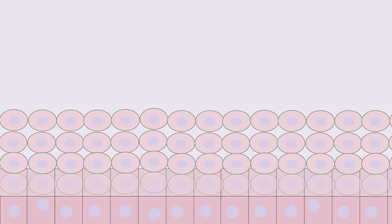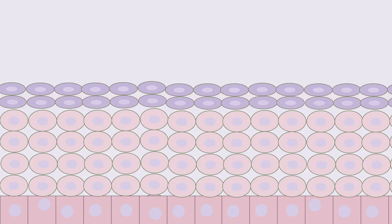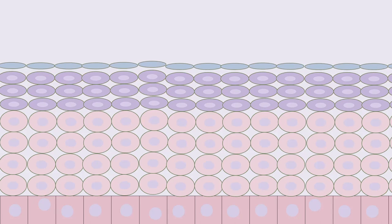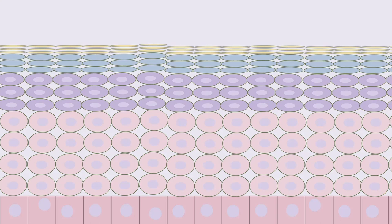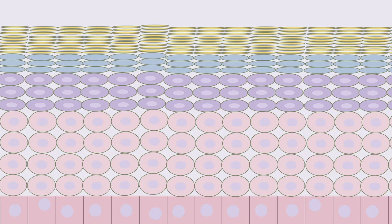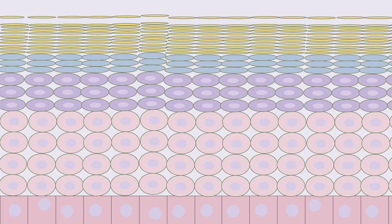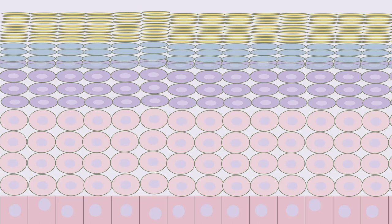The cells become flatter, the cell membrane thickens, and they generate large amounts of keratin and keratinulin. The stratum corneum consists of piles of dead keratinocytes that are the end products of terminal differentiation of epidermal keratinocytes. The shedding of the corneum, or desquamation from the stratum corneum, balances the proliferation of keratinocytes that the stratum basale creates.